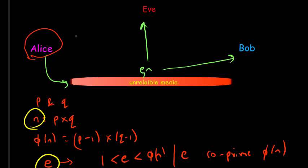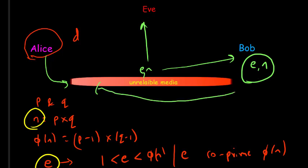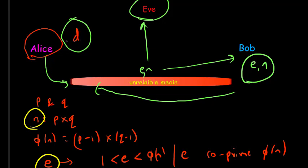Suppose Bob wants to send a secret message to Alice. He knows Alice's public key, so he can use the pair (e, n) to encrypt the message and send it over an insecure, unreliable channel. Because the message was encrypted using Alice's public key, it can only be decrypted by Alice's private key. Eve, the attacker, cannot decrypt the message because she does not have Alice's private key.